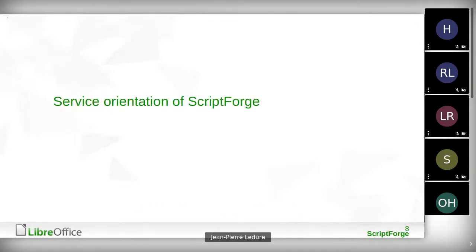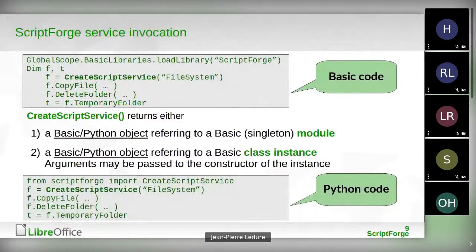ScriptForge is service-oriented. Everything starts from the CreateScriptService function in Basic or Python — same syntax. An object is returned, and on that object you apply methods and properties. Writing user scripts is very easy — here's a comparison of CopyFile, DeleteFolder methods on the same FileSystem service. CreateScriptService returns either a real Basic or Python object referring to a module, or it returns a Basic class instance where arguments can be passed in the CreateScriptService method itself.